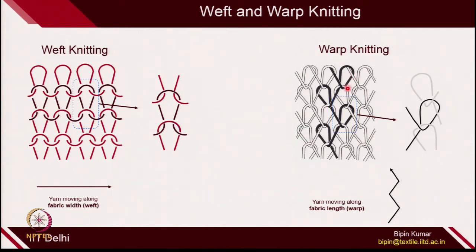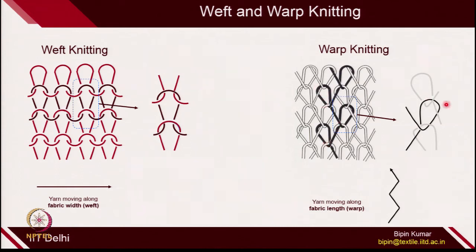In warp knitting, the principle is completely different. To create warp knitting, you need multiple ends of yarn, and each end of yarn will be making loops in either 1 or 2 columns. The warps move in different columns. Each loop is connected with different courses, which is not the case with weft knitting. In weft knitting, each loop is connected with neighboring loops via sinker loops. But in warp knitting, one sinker loop connects with the loops in the top course, and the other sinker part connects with the loops in the bottom course. Because of that, the sinker direction is completely different, the tension in the loop is not equal, and you expect these loops to be bent in certain directions.